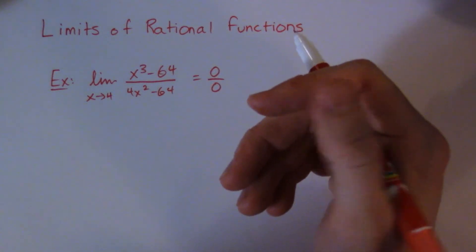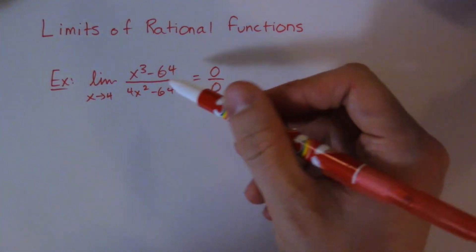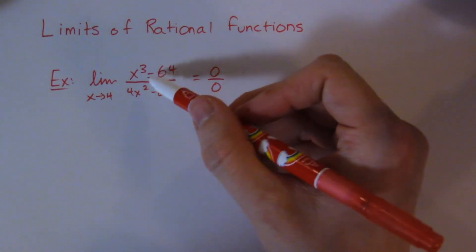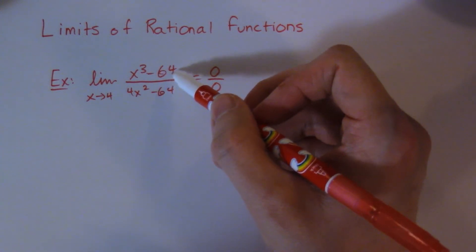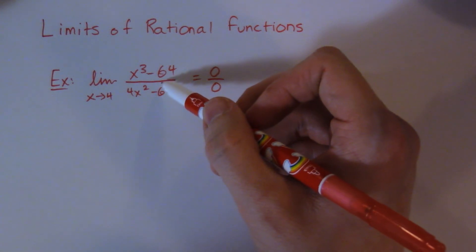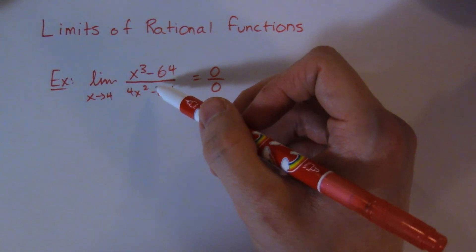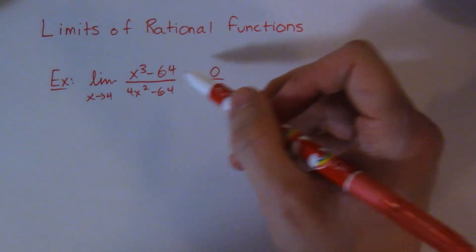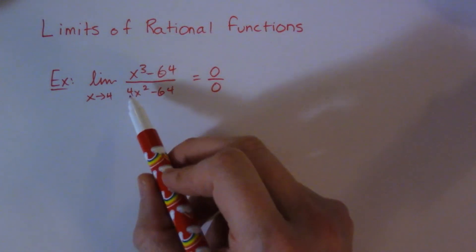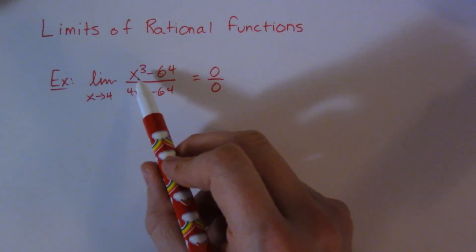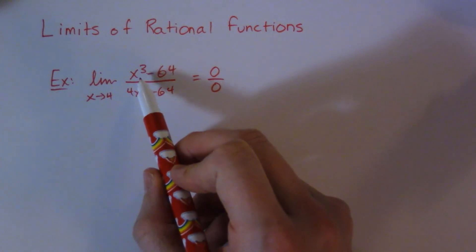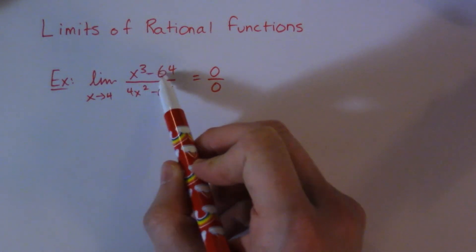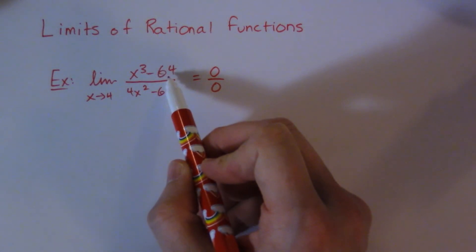So the way we can factor — this guy right here, x cubed minus 64 — that's called a difference of cubes. Let's go ahead and give this a shot. You know you have a difference of cubes because you have two perfect cubes: x cubed, obviously, and 64 is a perfect cube as well.